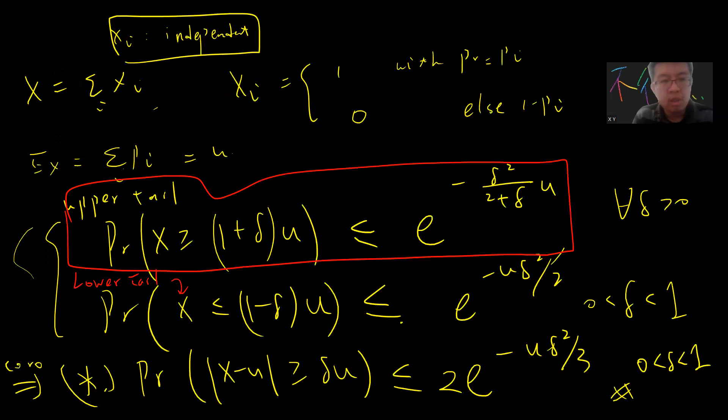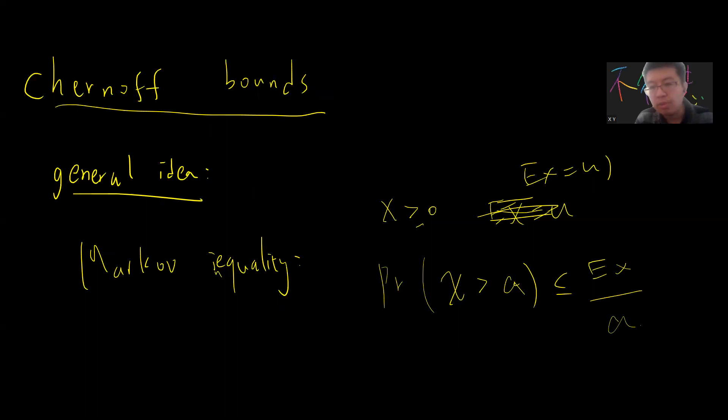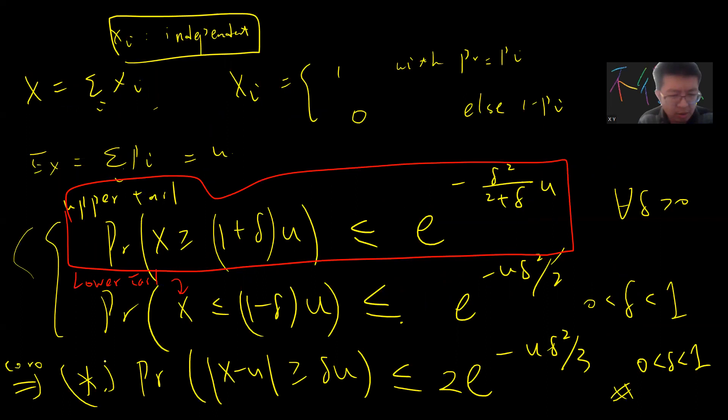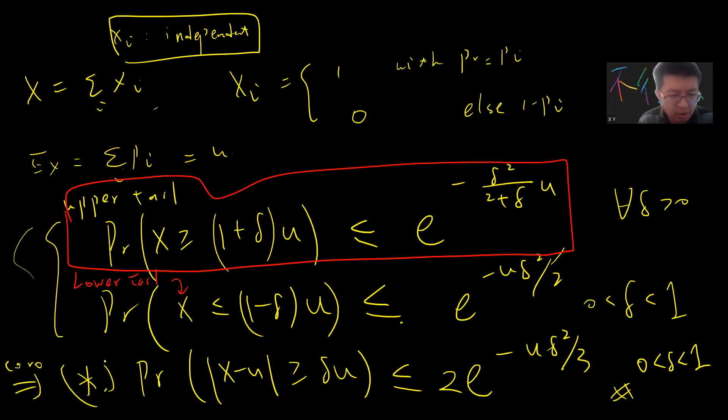This Chernoff bound is a powerful tool in computer science and probability theory. Hopefully this simplest version will be useful — I recently read some papers where I needed to use this one. So see you guys in the next videos.